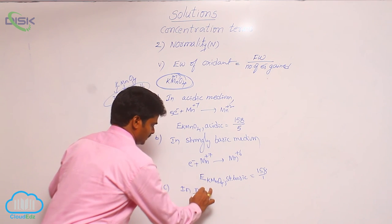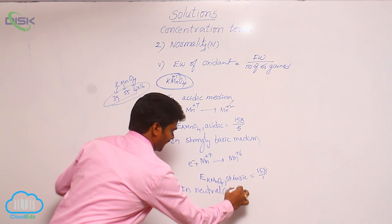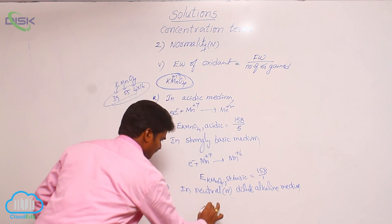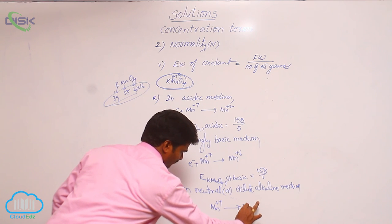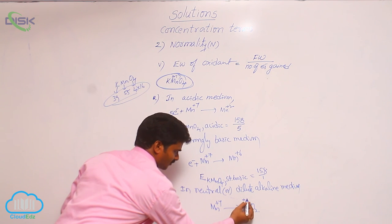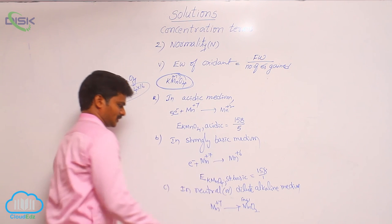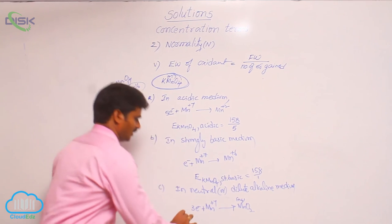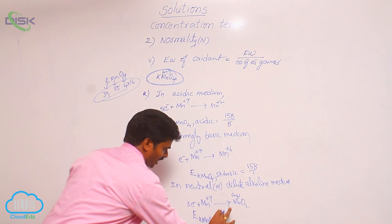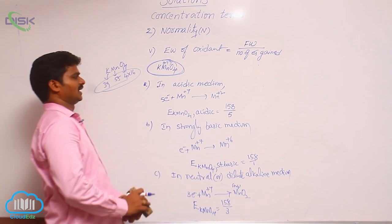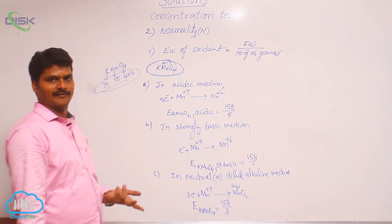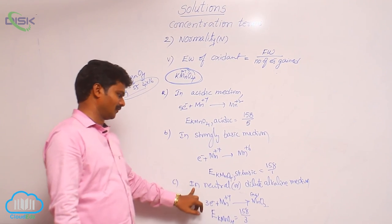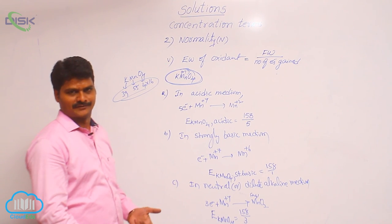Third case: in a neutral or dilute alkaline medium, manganese +7 changes to MnO2, where manganese is +4. The difference is 3, so 3 electrons are involved. Equivalent weight of KMnO4 in this case = 158 ÷ 3. So in different media, KMnO4 has different equivalent weights: acidic = 158/5, strongly alkaline = 158/1, neutral = 158/3.